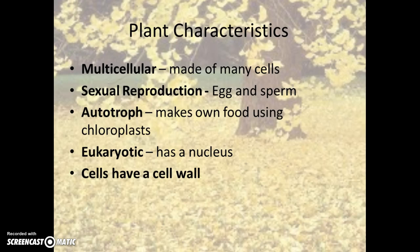In order for an organism to fall into the plant kingdom, it has to be multicellular, which means it's made of many cells. You know when something is multicellular because you can see it — anything unicellular is too small to see without a microscope. Plants also have to reproduce sexually, meaning they produce an egg and a sperm that unite to create a new plant.